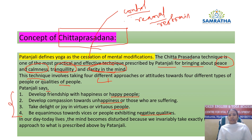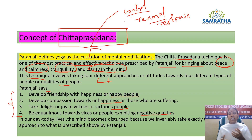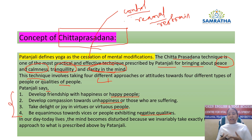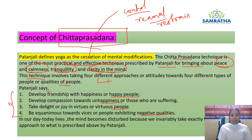The first technique: develop friendship with happy people. Patanjali is telling us to try to be close to happy people, or cultivate inner happiness. When you are surrounded by happy people, you can grow well. When we are surrounded by happy people, there is a chance for us to grow well.